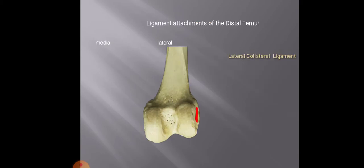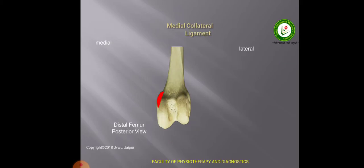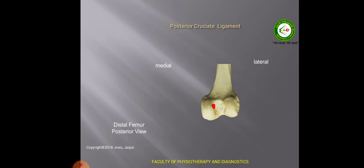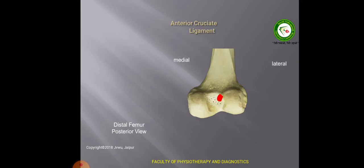The ligaments attached to the lower end of the femur: the lateral collateral ligament of the knee joint is attached on the lateral epicondyle of the femur. On the medial epicondyle we have the attachment of the medial collateral ligament of the knee joint. On the intercondylar area we have the attachment of the cruciate ligaments. The posterior cruciate ligament attaches on the lateral surface of the medial condyle, and on the medial surface of the lateral condyle we have the attachment of the anterior cruciate ligament.